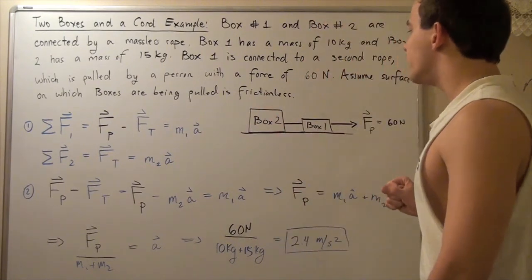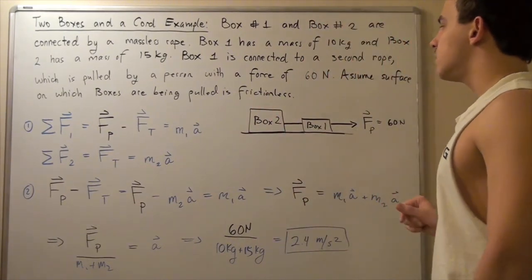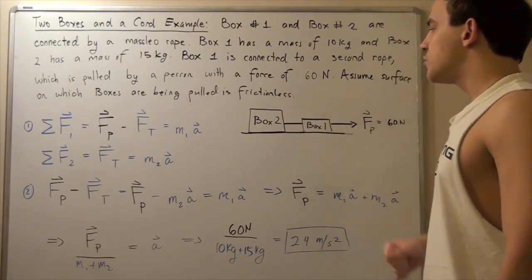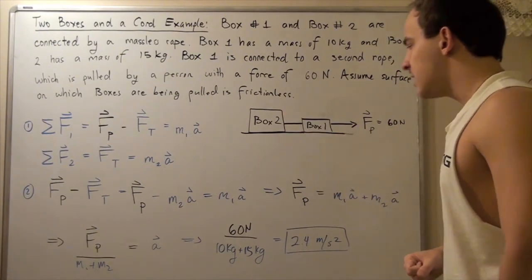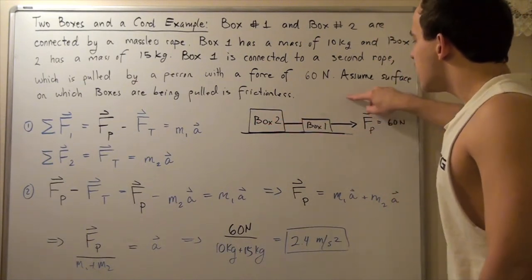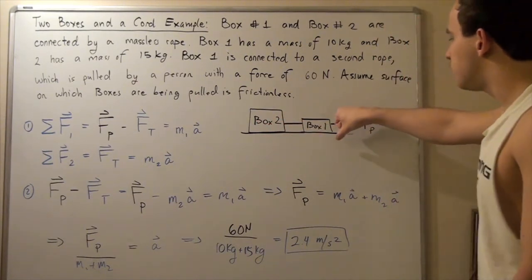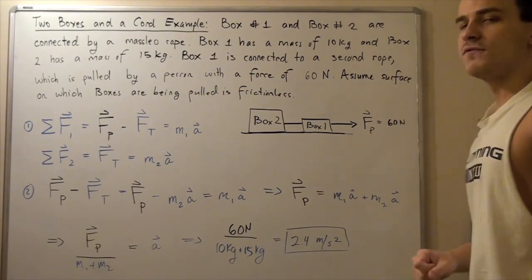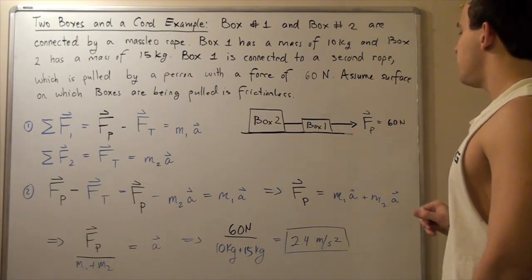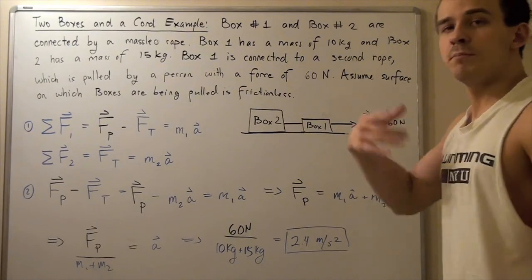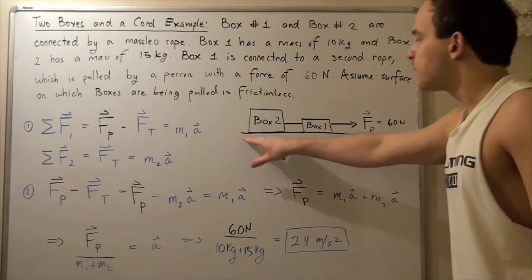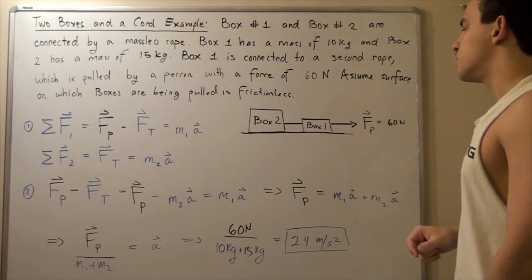Let's look at the following diagram. Box number one weighs 10 kilograms and box number two weighs 15 kilograms. This is our rope connecting the two boxes, and this is the second rope which a person pulls on with a force of 60 Newtons. Let's represent this force as F subscript P — P for the pulling force — and these masses as M subscript 1 and M subscript 2.